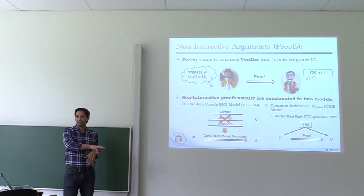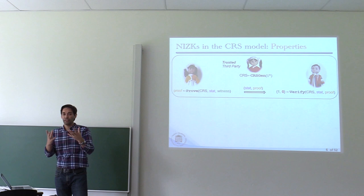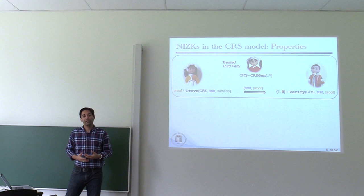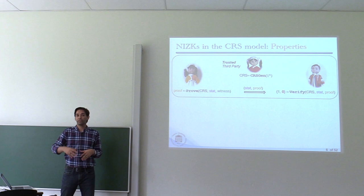More formally, in the CRS model we have a third party that runs an algorithm called CRS generation, which takes some information about the relation for which you want to generate public parameters and outputs the common reference string. For example, Zcash used an MPC protocol to generate the public parameters that are used in proof generation and proof verification when you want to spend a coin.